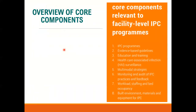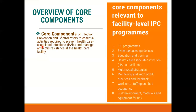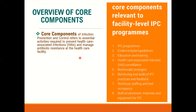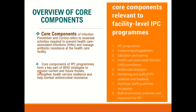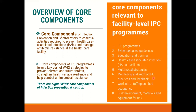The eight WHO Core Components of infection prevention and control are: IPC programs; evidence-based guidelines; education and training; healthcare-associated infection surveillance; multi-model strategies; monitoring and audit of IPC practices and feedback; workload, staffing and bed occupancy; and built environment, materials and equipment for IPC. These core components refer to the essential activities required to prevent healthcare-associated infections and manage antimicrobial resistance at the healthcare facility level, and form a key part of WHO strategies to prevent current and future threats and combat antimicrobial resistance.